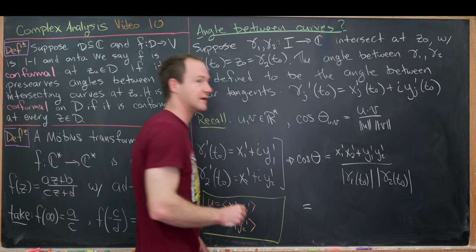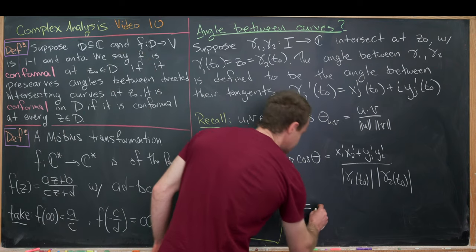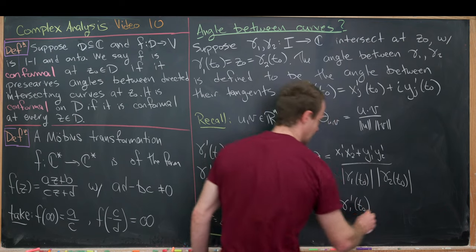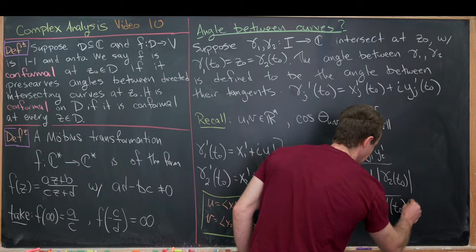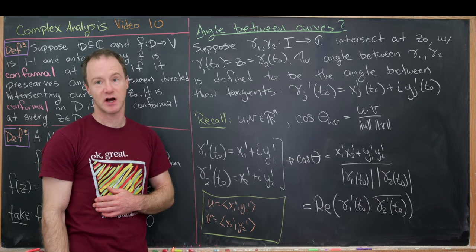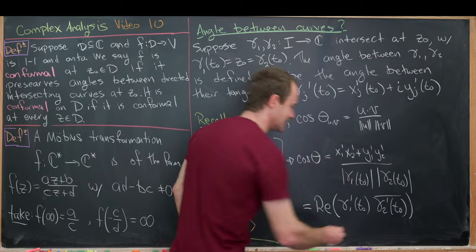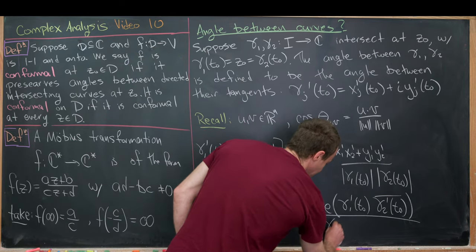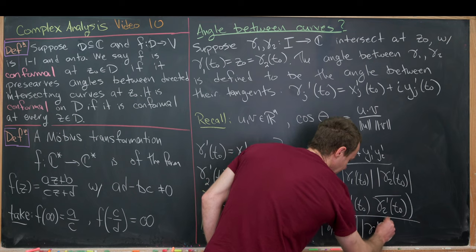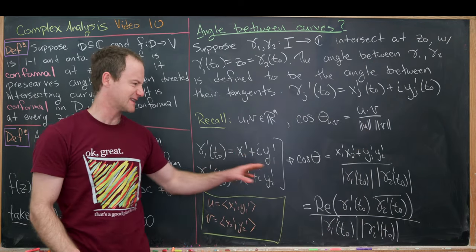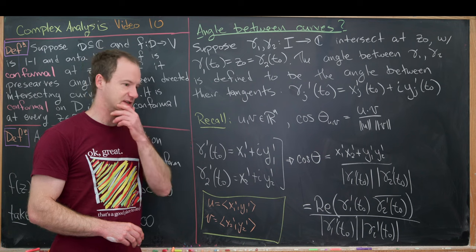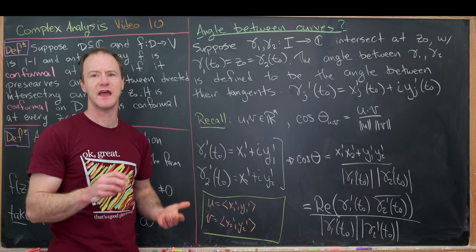We can also write the numerator using the real part operation. This is in fact the real part of γ₁'(t₀) times the conjugate of γ₂'(t₀). If you calculate γ₁' times the conjugate of γ₂' and take the real part, you get exactly this numerator. So we have a nice closed form for the angle between two complex curves: the real part of γ₁'·conj(γ₂') over the product of their moduli.